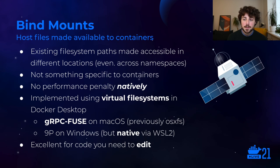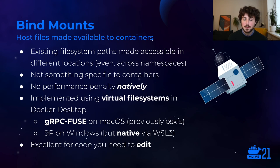Next up is bind mounts. These are just a Linux feature — not something container-specific — to make a file system location like a directory accessible in a different location in the path hierarchy. For example, you could bind mount /system/data to /data and make it available there. There's no performance penalty for doing that natively — it's basically mapped to the same underlying file system storage. One nice thing is you can do this across mount namespaces, so you can bind mount storage from the container host to the container itself.